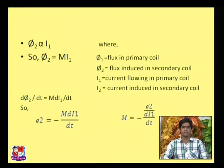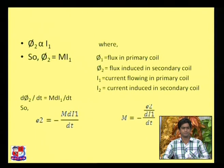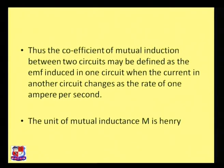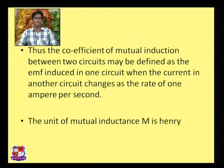E2 is the induced EMF on the secondary side. We can conclude that the coefficient of mutual inductance M = −E2 / (dI1/dt). The coefficient of mutual induction between two circuits is defined as the EMF induced in one circuit when the current in another circuit changes at the rate of 1 ampere per second. The unit of mutual inductance M is Henry.